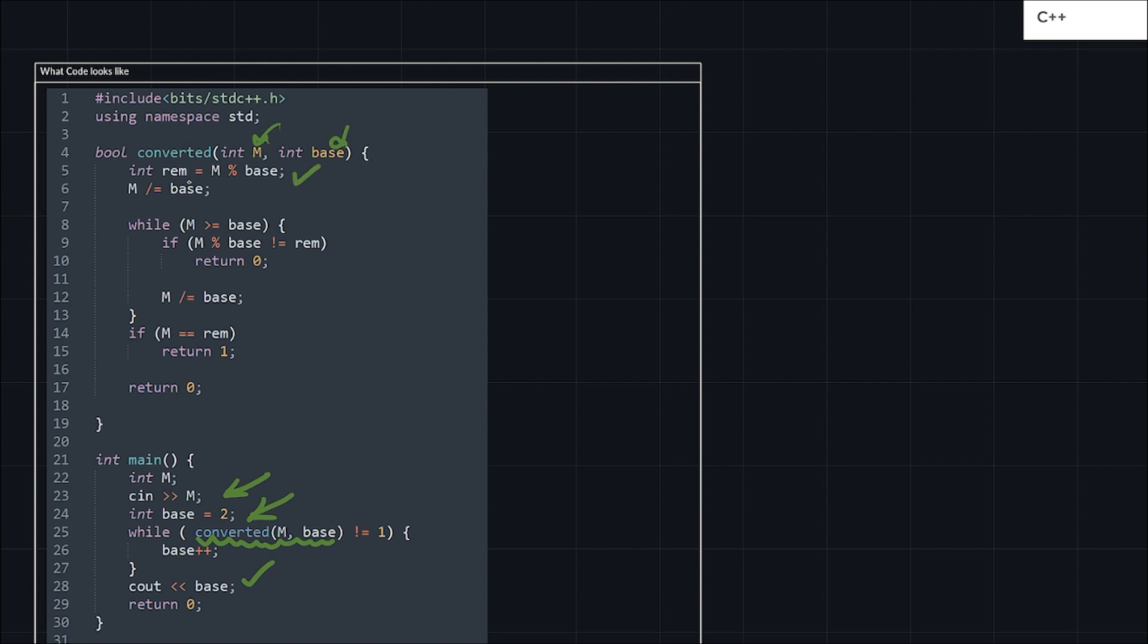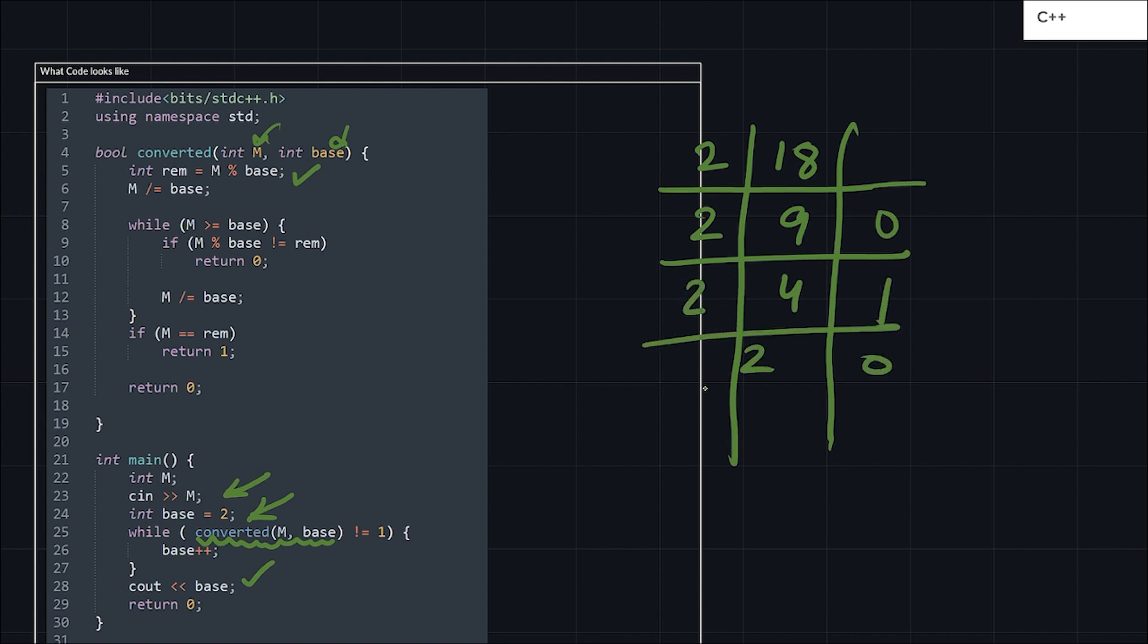What I'm doing in the converted function is I'm taking a remainder, M mod base, that will give me the remainder, and I'm just dividing. Suppose there is something like 18 and if you want to convert this into binary, what we usually do is divide by 2, which gives 9, so my remainder is 0. Then I will divide this again, this will be 4 remainder 1, then 2 remainder 0, then 1 remainder 0. So like this my decimal number will be 10010. If M is greater than or equal to base, I do M mod base. If it is not equal to remainder, I'll return 0 because it is not possible since all the digits should be similar.